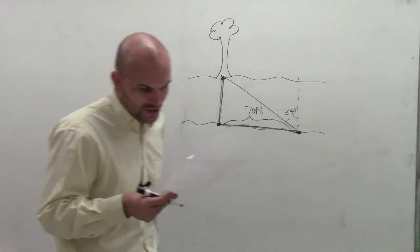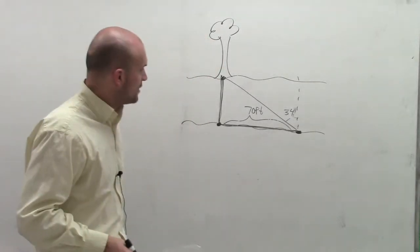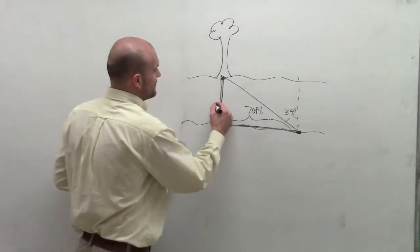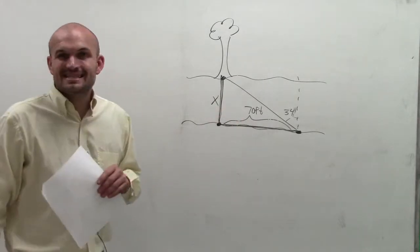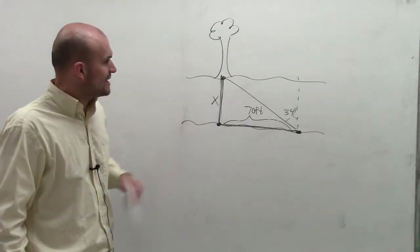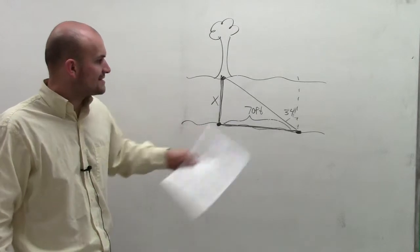Then what they like us to do is find the width of the river. So therefore, we need to figure out what this distance is going to be x. The only thing right now is we know that this is x. That distance is 34.